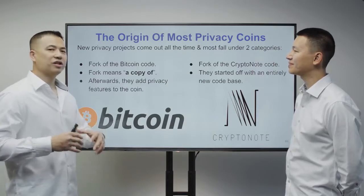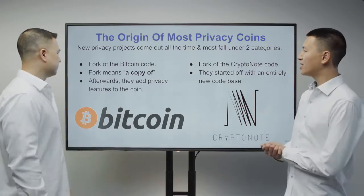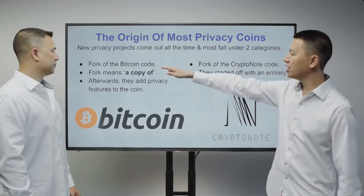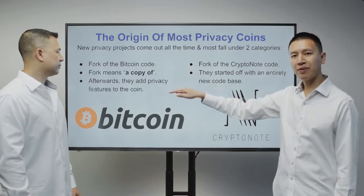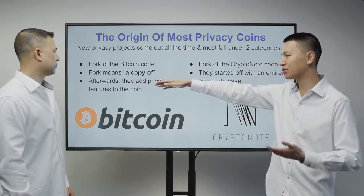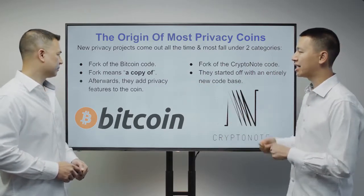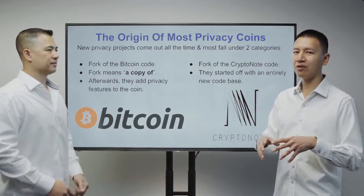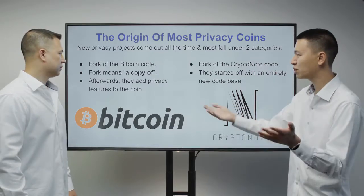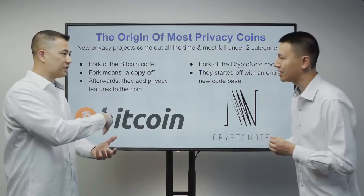The origin of most privacy coins comes from two categories. All of the privacy projects fall in one of these two categories at the moment. They either start off with a Bitcoin code base and then add privacy features to that — that's called a fork — or they take the existing code base and start a new branch, adding different privacy technologies as discussed in the previous video.